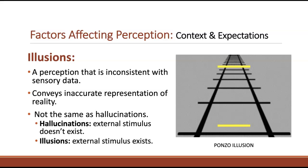Our perception is not always correct. We're humans, we make mistakes, and that includes the way that we interpret sensory information. There are a lot of different ways that can go wrong. One way we can see this is through illusions. An illusion is a perception that does not match the incoming sensory data, and as a result, the representation of reality that we perceive is actually false.